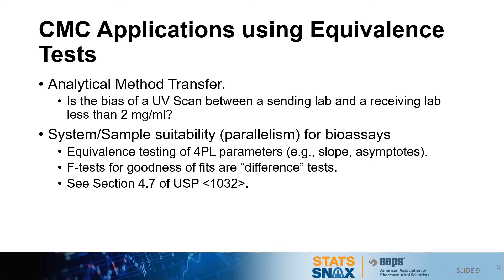Another recent application concerns bioassays and the system and sample suitability criteria used there, historically called a parallelism test. Material on the use of equivalence tests can be found in Section 4.7 of USP 1032. The equivalence test examines parameters of your 4PL curve, such as the slope or the asymptotes, and tests equivalence between your reference and test sample for those parameters. Many people have used goodness-of-fit tests — chi-squared or F tests — which are actually forms of the difference test. The notion there is performing a test hoping not to see a difference and then concluding they're the same, which is the mindset we want to move away from.